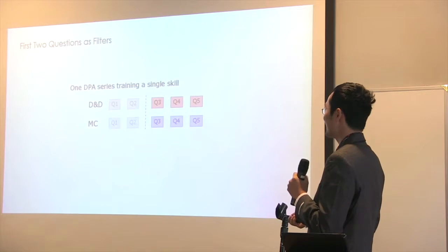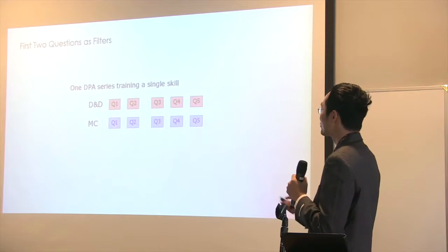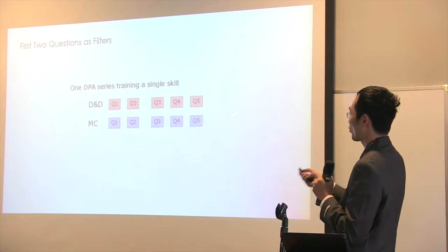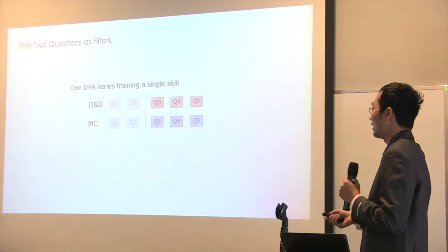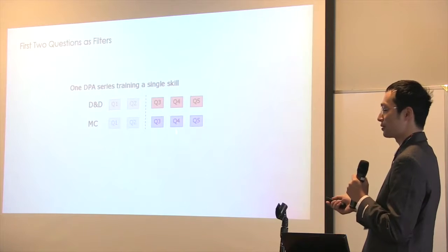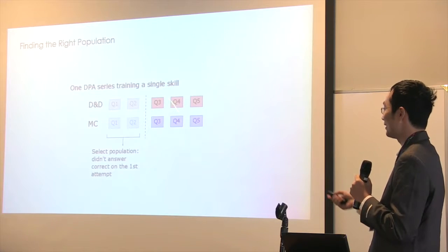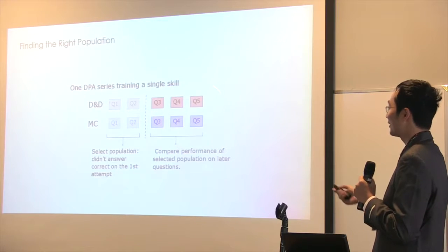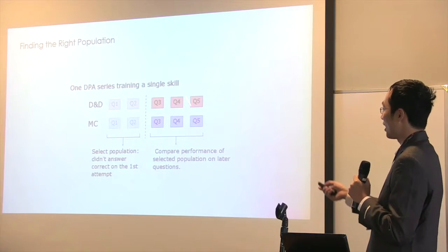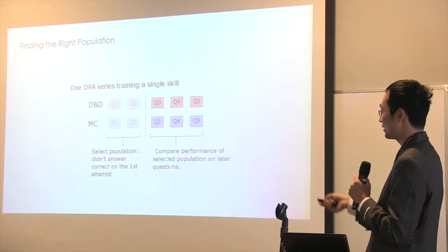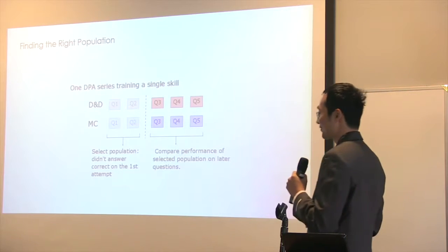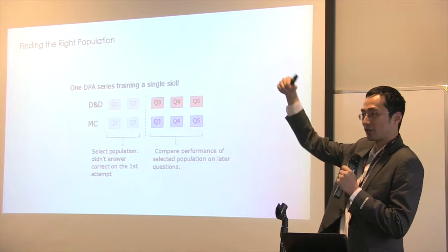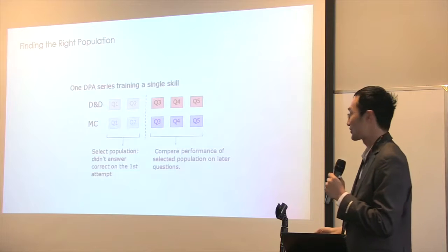What I did was focus on a series of five or six questions on the same skill. I used the first one or two problems as a filter, selecting only the population who had difficulty completing these problems. Then I compared their performance on the following problems in the same sequence. My population N went down from big data to small data, unfortunately, but it showed a pretty big difference.